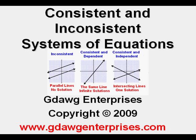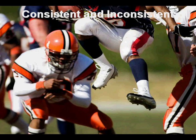Consistent and Inconsistent Systems of Equations. In English, when we consider the words consistent and inconsistent, we mean that something is reliable or not reliable.